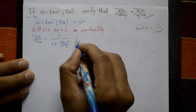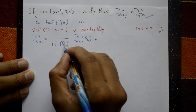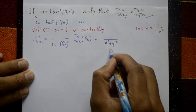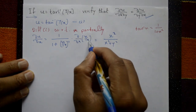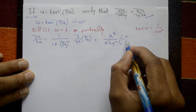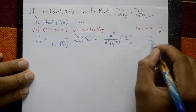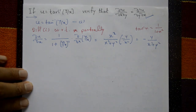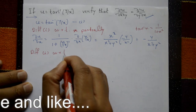Differentiating y/x with respect to x: taking LCM gives (x² + y²) divided by x². Simplifying, with y as a constant, the derivative of 1/x is minus 1/x². So ∂u/∂x equals (−y/x²) times x² over (x² + y²), which simplifies to −y/(x² + y²). Next, differentiate u with respect to y partially.